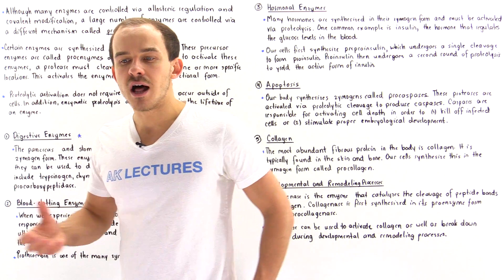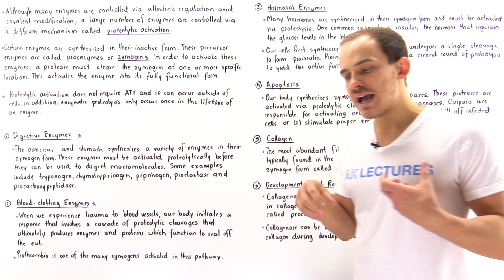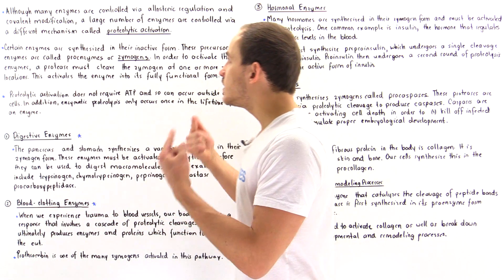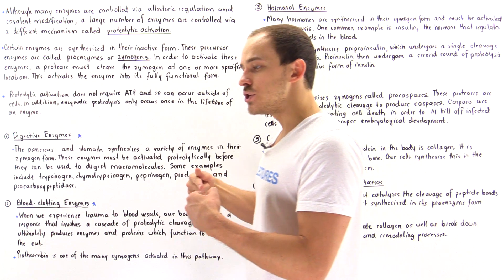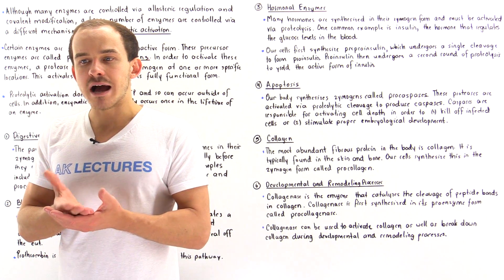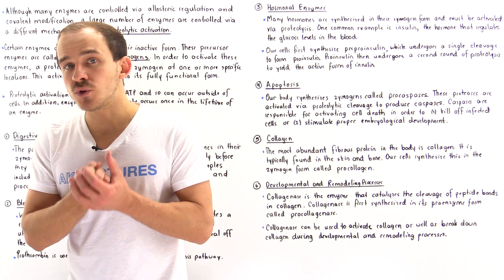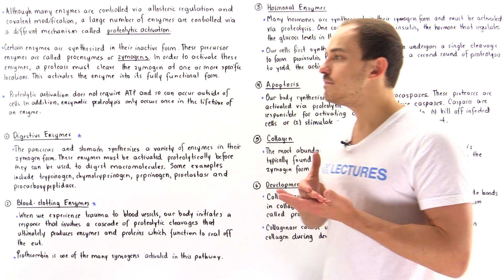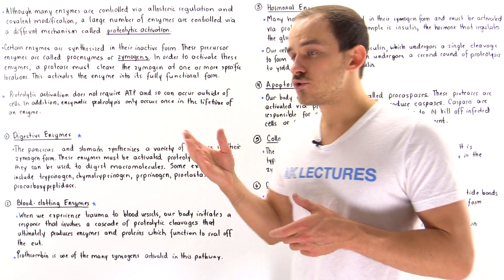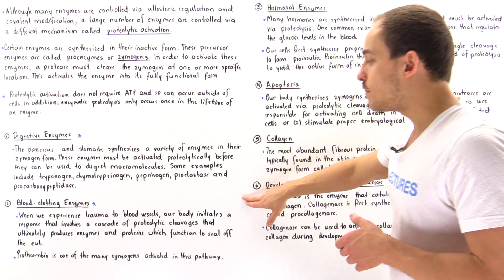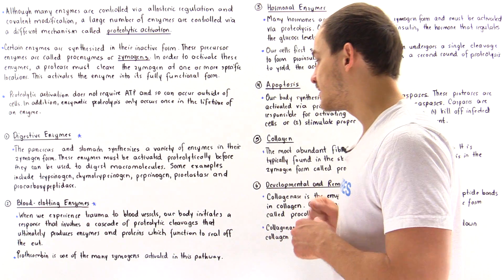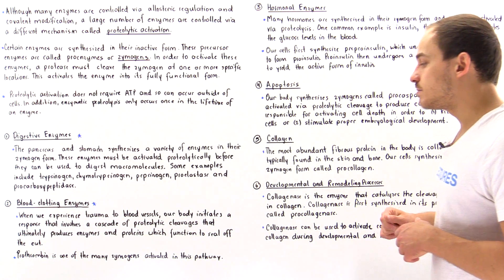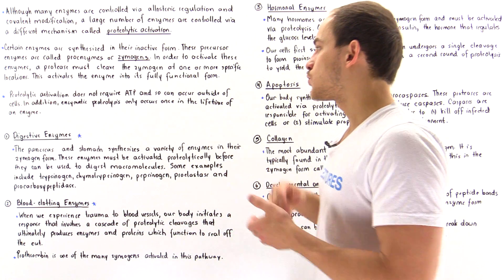Now let's move on to blood clotting enzymes. Inside our body we have the blood clotting cascade, which involves the proteolytic activation of many different zymogens into active enzymes. These enzymes help produce the proteins involved in creating a clot when there is some type of trauma to a blood vessel. When we experience a cut, our body initiates a cascade of proteolytic cleavages that ultimately seals off that trauma area.